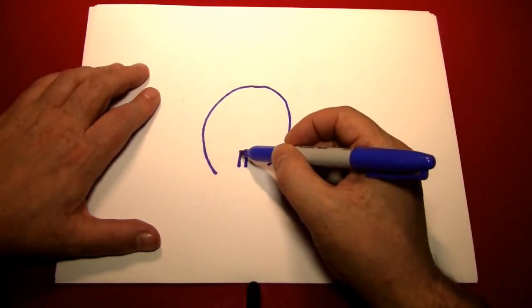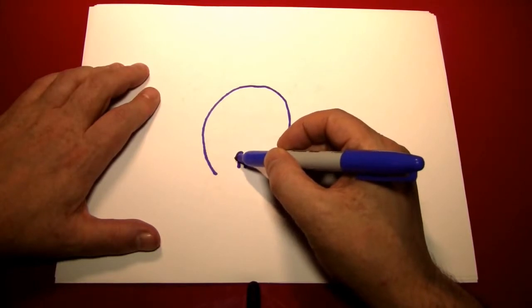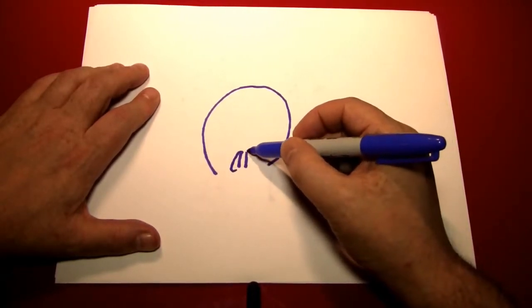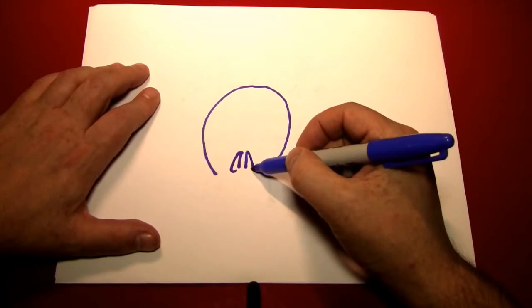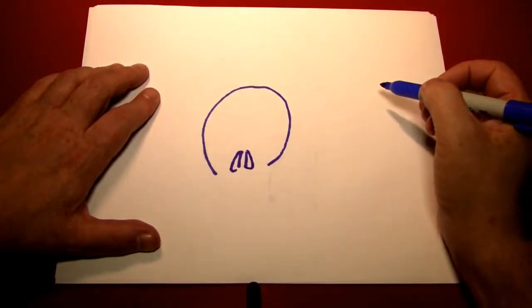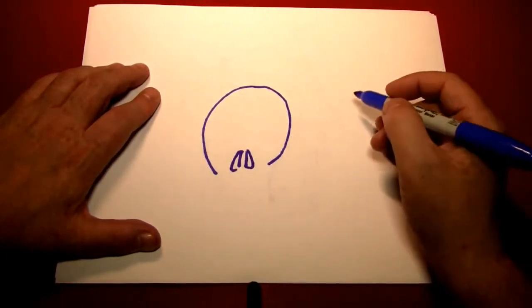Then you can build the nose around that. A couple of diagonal lines going to either side. That just kind of curves back into that original number 11. And we have a great nose.